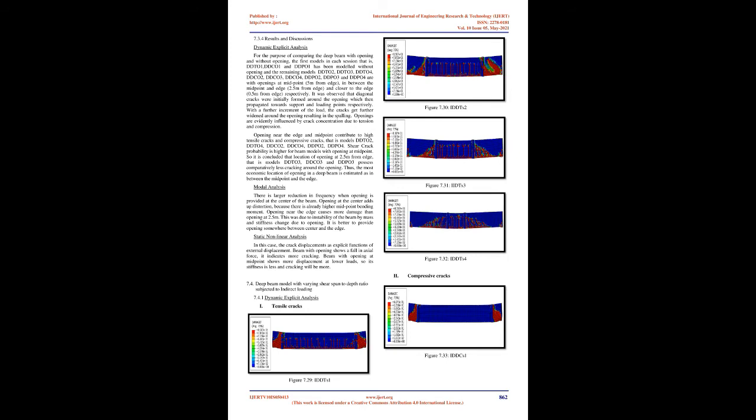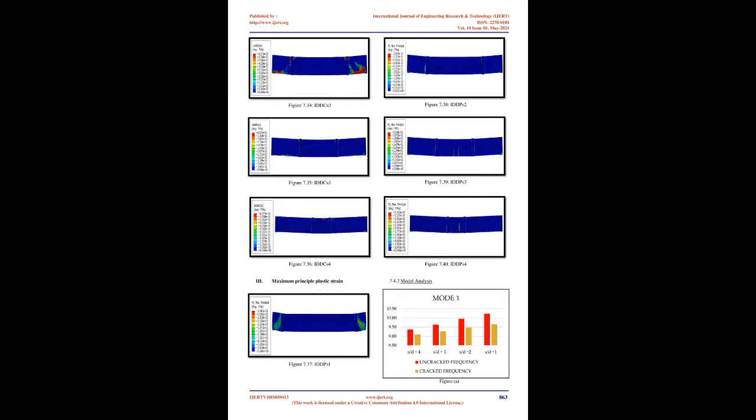The objectives of the present study are: to study different parameters causing crack concentration in deep beams; to model and analyze the effect of shear crack concentration in deep beam models; to determine the optimized model with the most economical shear span to depth ratio and location of opening; to model and assess internal strengthening of openings using circular steel plates; and to model and assess the substitution of 3D panels and steel fibers as web reinforcement in deep beams.